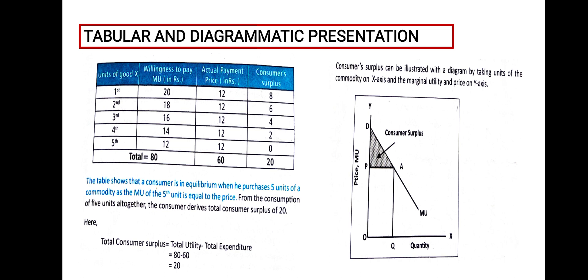Looking at the table, the columns are: units of goods, willingness to pay, actual payments, and consumer surplus. For the first unit of goods, the willingness to pay is $20. This gives us the consumer surplus for that unit.